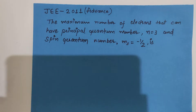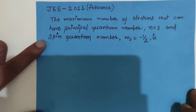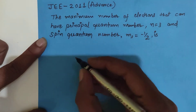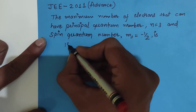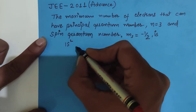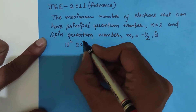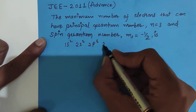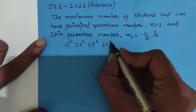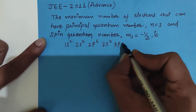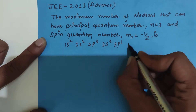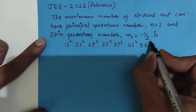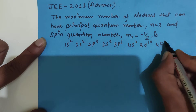For this question, we will write the electronic configuration in the most simple way. The electronic configuration is 1s², 2s², 2p⁶, 3s², 3p⁶, 4s², 3d¹⁰, and 4p⁶.